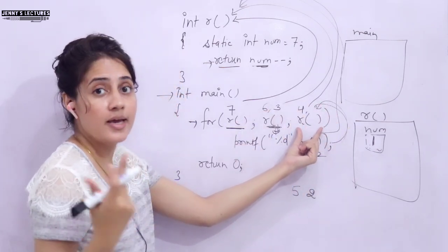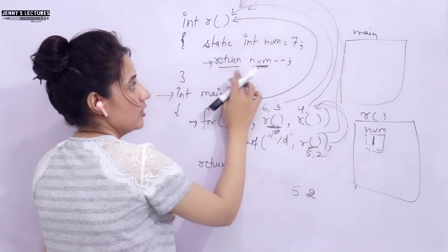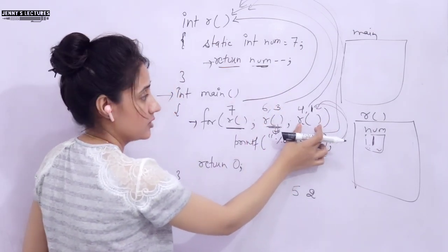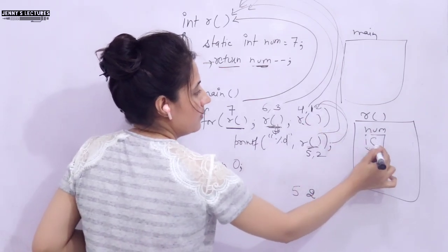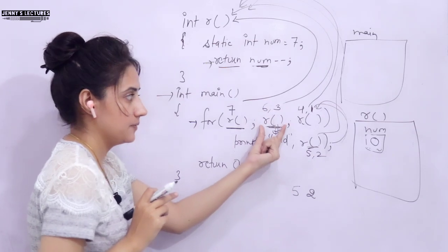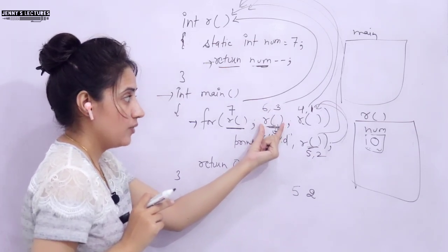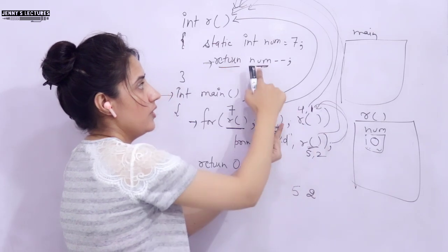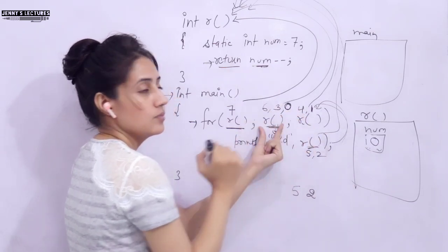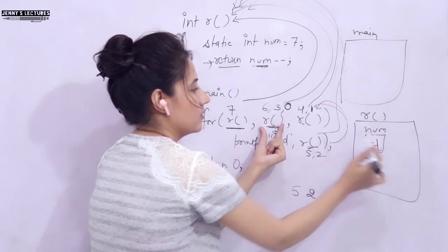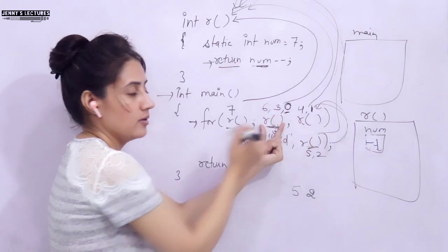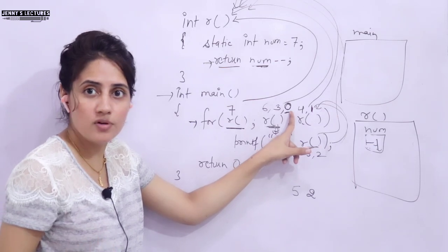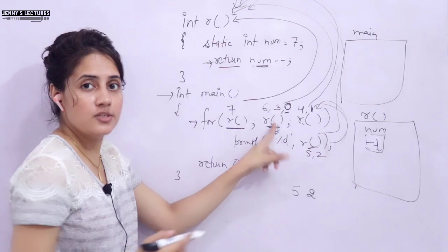After printing 2, control goes to the increment/decrement part — function r is called, num is 1, it returns 1, and num becomes 0. Then the condition is checked: function r is called again, num is 0, it returns 0 as the original value, and num becomes -1. The condition value is 0, which means false, so we exit the for loop.